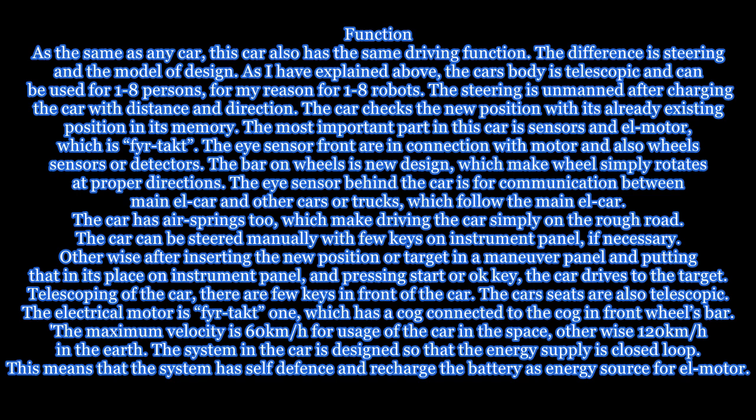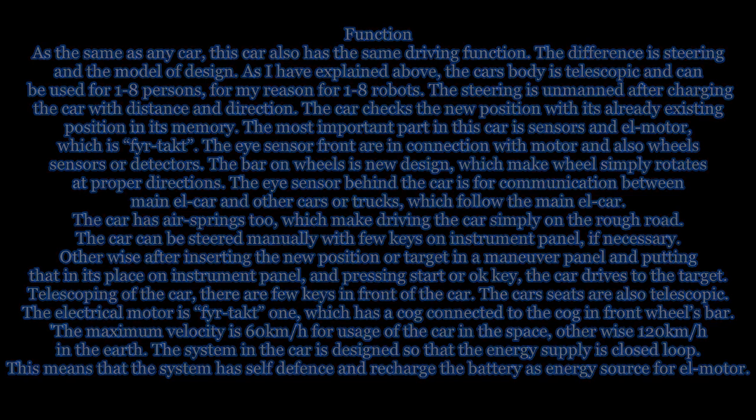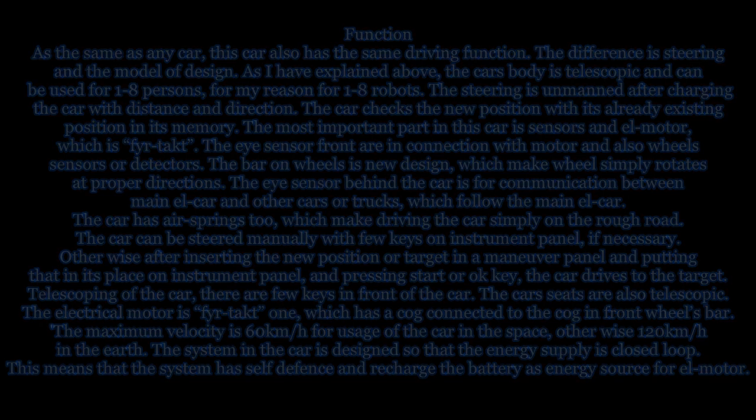There are few keys in front of the car. The car's seats are also telescopic. The electrical motor is fire-tacked, which has a cog connected to the cog in the front wheels bar. The maximum velocity is 60 km/h for usage in space, otherwise 120 km/h on Earth. The system is designed so that the energy supply is closed loop, meaning the system has self-defense and recharges the battery as energy source for the L-Motor.